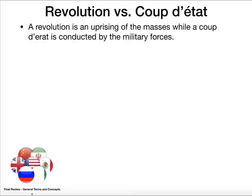The difference between a revolution and a coup d'état: a revolution is an uprising of the masses, while a coup d'état is conducted by the military — the best example of that is in Nigeria. I hope this is clear for you. I'll put this presentation on Google Classroom as well. Good luck, and I'll talk to you in the next video.